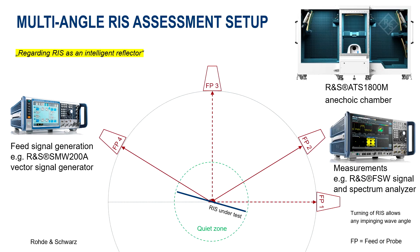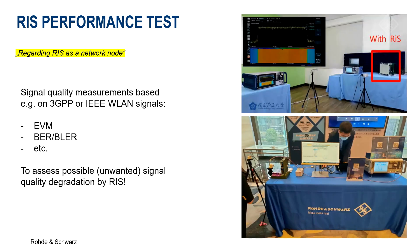To measure the potential switching capabilities of a RIS supporting programmable reflecting angles, a multi-angle measurement setup is required. With such a setup, you can even test whether the RIS supports intelligent beamforming algorithms. As RIS will become part of the radio network, it shall not have a negative impact on the wanted signal quality. Thus, performance testing is required as well to test any unwanted impact on the signal's EVM or other signal quality parameters.